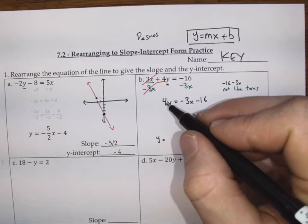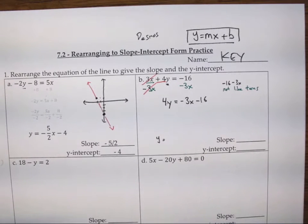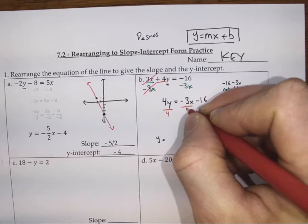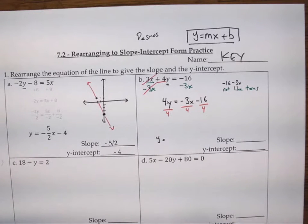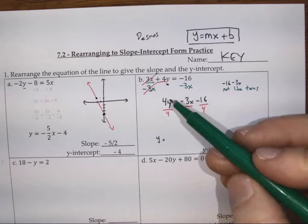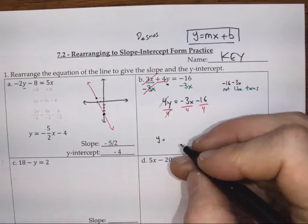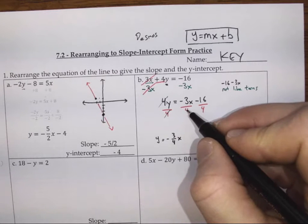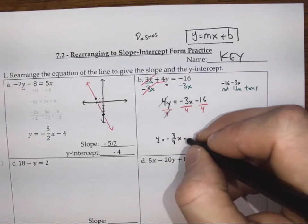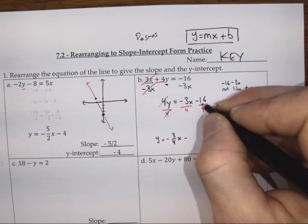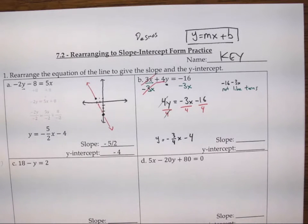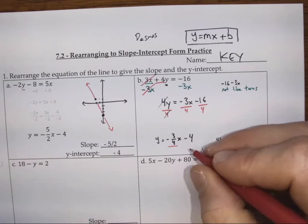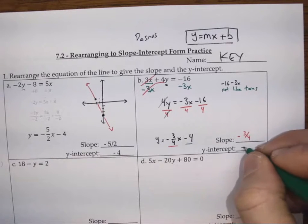y isn't quite by itself yet — we still have a 4, and there's a hidden multiplication between the 4 and the y. To do the opposite of multiplying by 4, I'm going to divide both sides by 4, meaning all terms. That cancels out the 4s, and we get y = negative 3/4 x minus 16/4, which simplifies to negative 4. So we've got a slope of negative 3/4 and a y-intercept of negative 4.